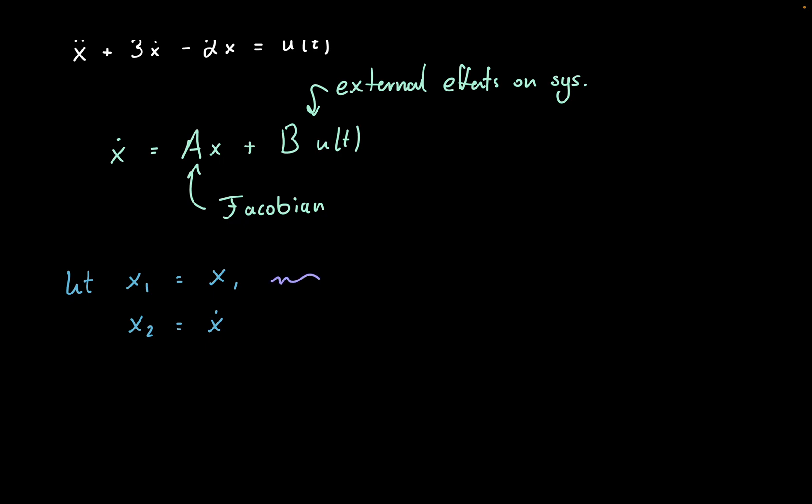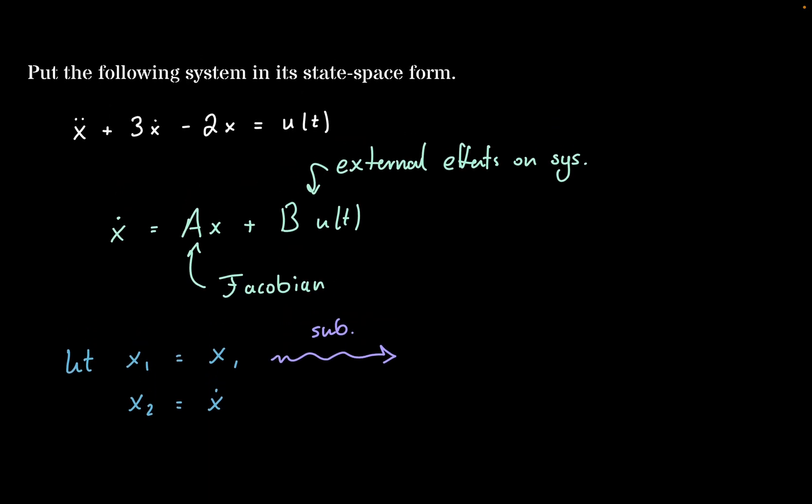So once we have those, what we can do is we can then sub this back into our original equation for the system. So we said that x2 is going to be equal to x dot. So x double dot would then be x2 dot.